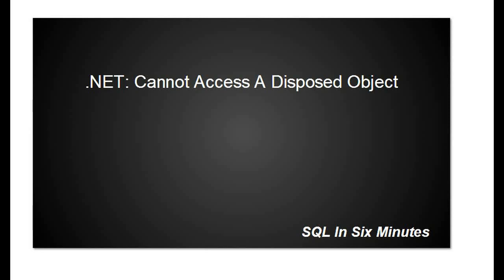This morning we're going to do a really quick debugging video. It's important to pay attention to the logic behind this because every situation is going to be a little bit different, but the overall logic is the same. So what happens when you receive the error in .NET — whether it's C# or VB.NET — 'Cannot access a disposed object'?